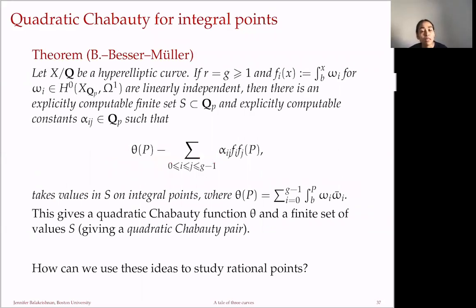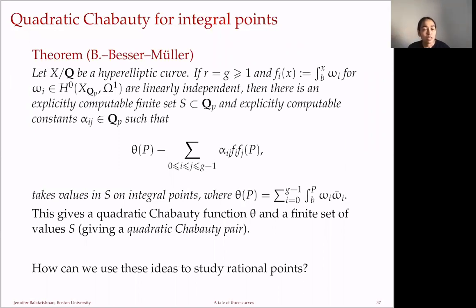The theorem with Besser and Mueller: for a hyperelliptic curve with rank equal to genus, assuming the Coleman integrals of regular one-forms ω_i are linearly independent, there is an explicitly computable finite set S and constants α_{ij} such that the quadratic Chabauty function θ—a double Coleman integral ∫ω_i ω̄_j (where ω̄_j is dual under the cup product pairing)—satisfies θ minus Σ α_{ij} f_i f_j taking values in S on integral points. Setting this equal to each value in S and finding all p-adic solutions gives the set X(ℚ_p)₂ in the integral point case.